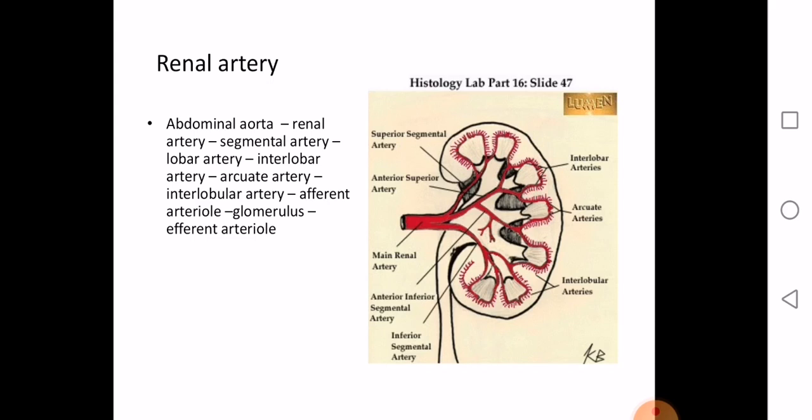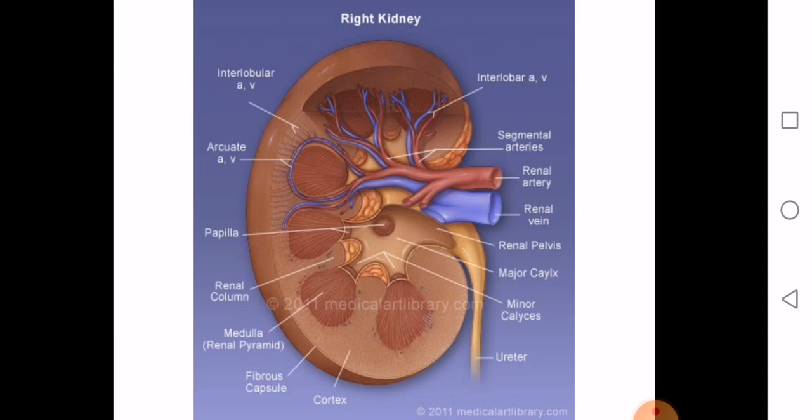The efferent arterioles begin from the glomerular capillaries and end in the peritubular capillary plexus, which surrounds the proximal and distal tubules of the nephron. The blood flow sequence is: renal artery → segmental artery → lobar artery → interlobar artery → arcuate artery → interlobular artery → afferent arteriole → glomerular capillary plexus → efferent arteriole → peritubular capillary plexus.